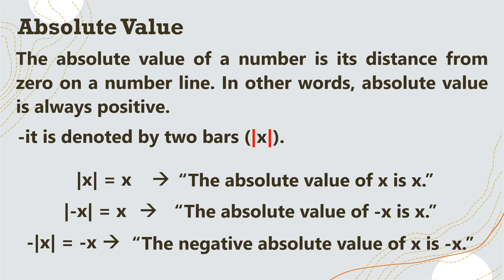So why is the answer negative? Based on the definition, the absolute value is always positive. But in this case, the answer is negative x. So what is inside the absolute value is x, and therefore the absolute value of x is positive x. But there is a negative sign outside of the absolute value — that's why the answer is negative x.